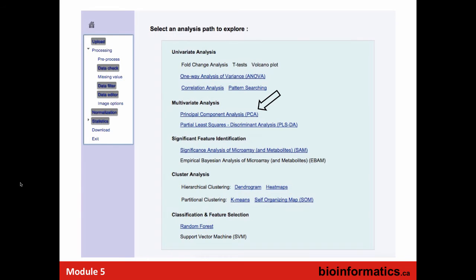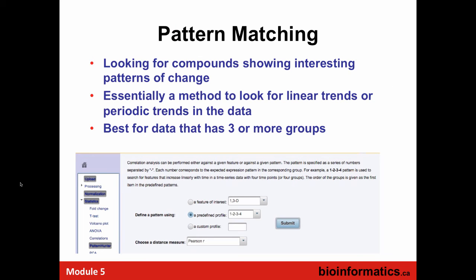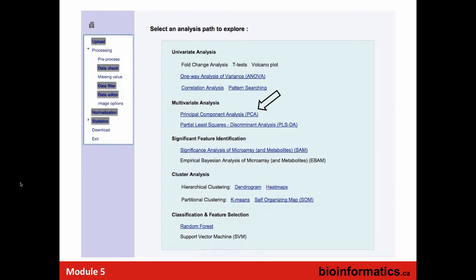Question: for the pattern hunter, if you don't specifically have a time or concentration-dependent variable but instead different conditions, could you create a custom pattern? Yes — you can choose predefined pattern sets or a custom profile. You can say you want to see a sinusoidal one, and it'll look for those. It's very customizable.